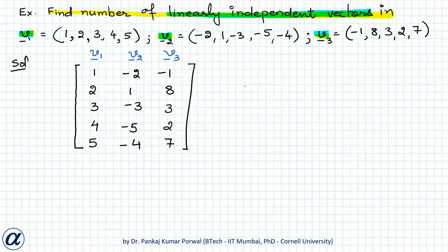This matrix is a 5 by 3 matrix, so we use the row echelon form to find the rank. We need to convert this matrix into row echelon form using elementary row operations.